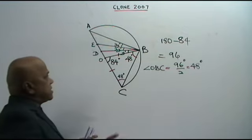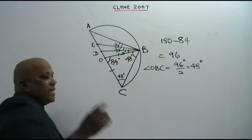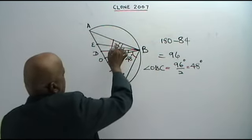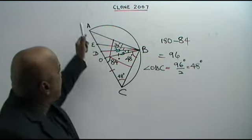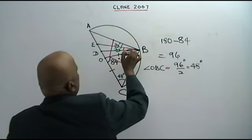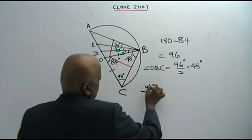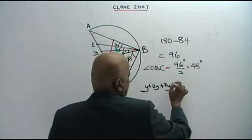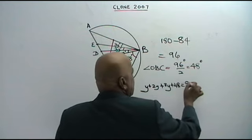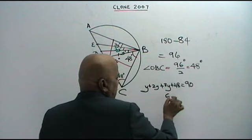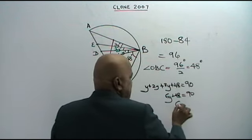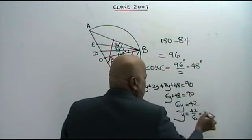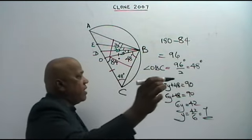Now apply the next circle theorem: the angle in a semicircle is a right angle, so angle ABC equals 90 degrees. Therefore Y plus 2Y plus 3Y plus 48 equals 90. This gives 6Y plus 48 equals 90, so 6Y equals 42, and Y equals 42 divided by 6, which equals 7.